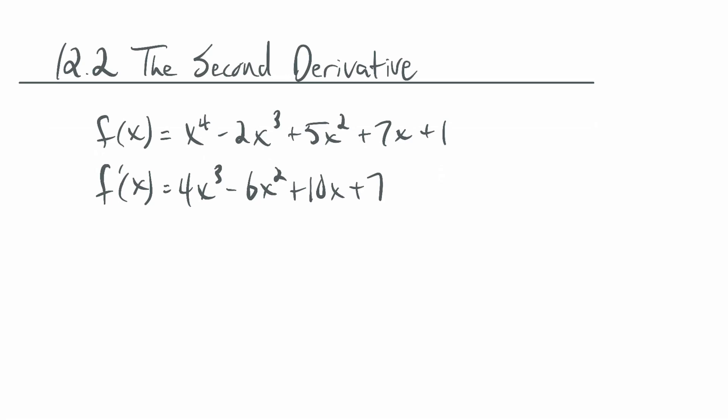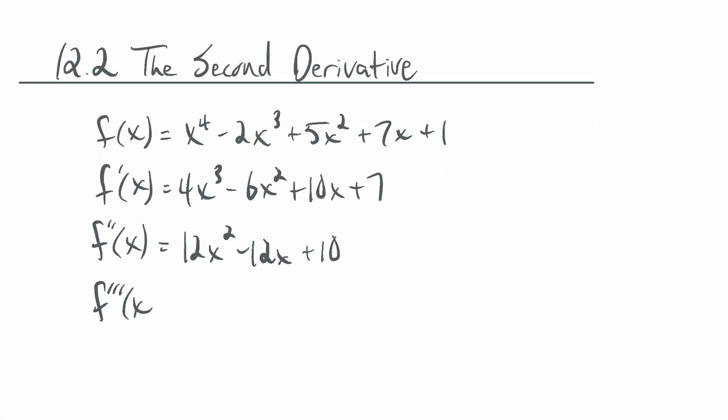The first derivative test uses the first derivative, but now we have the second derivative. If I just find the derivative again, I get f''(x). So I get 12x² - 12x + 10. And if I want, I can do it again. I can find the third derivative, f'''(x), which gives 24x - 12. And if I want, I can keep going — fourth derivative, fifth derivative, and so forth.